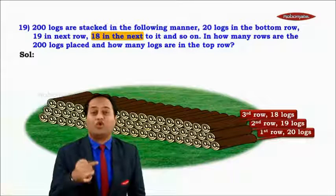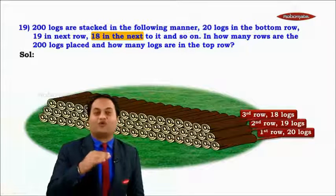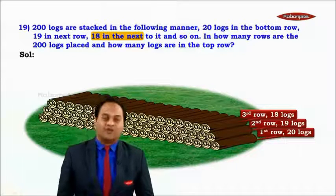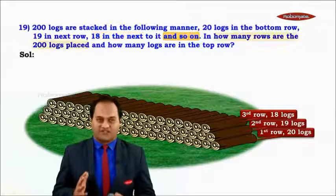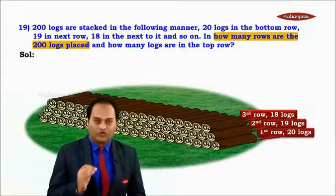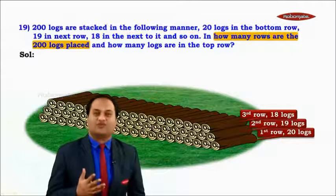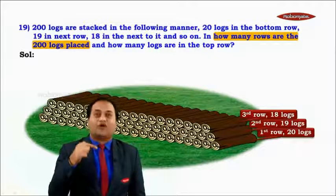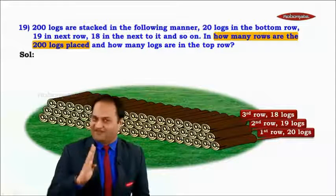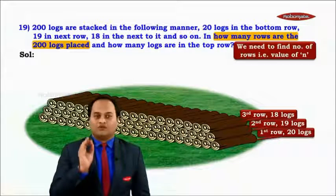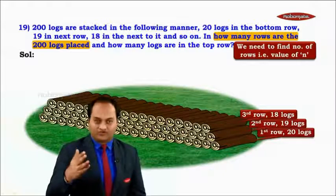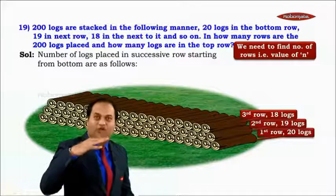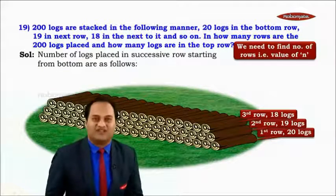The question asks in how many rows the logs are placed, so we need to find the value of n, because number of rows means number of terms. We are supposed to find n. Since a total of 200 logs are placed, Sn is equal to 200.